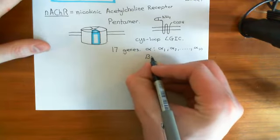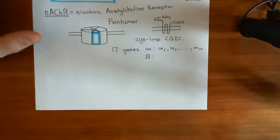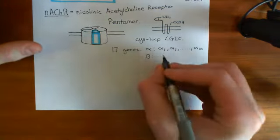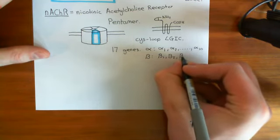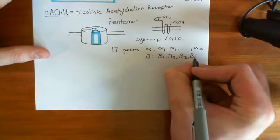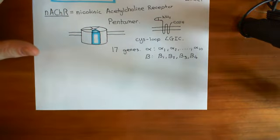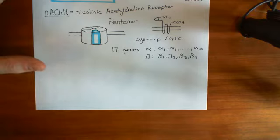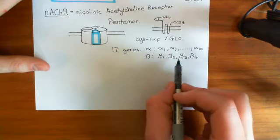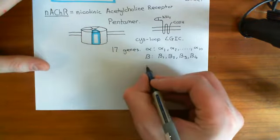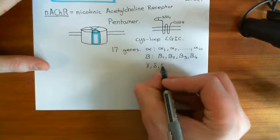Then you have the beta family of nicotinic acetylcholine receptor subunits, which has four different genes: beta 1, beta 2, beta 3, and beta 4. Again, these are all separate genes coding for slightly different proteins, which can all function as a fifth of the nicotinic acetylcholine receptor pentamer. That accounts for 14 of the 17 genes. The final three are not clustered into families — they are simply the gamma gene, the delta gene, and the epsilon gene. Those are the 17 genes coding for subunits of the nicotinic acetylcholine receptor.